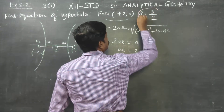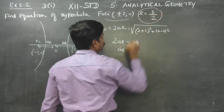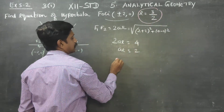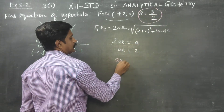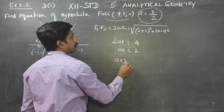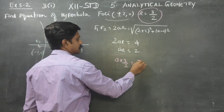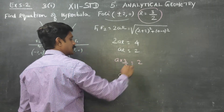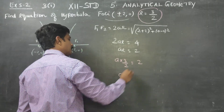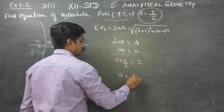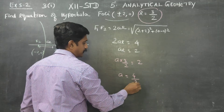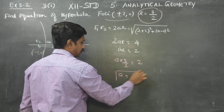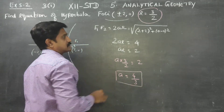Eccentricity is 3 by 2, so substituting: a into 3 by 2 is equal to 2. Cross multiplying, a is equal to 4 by 3. Therefore a squared is equal to 16 by 9.